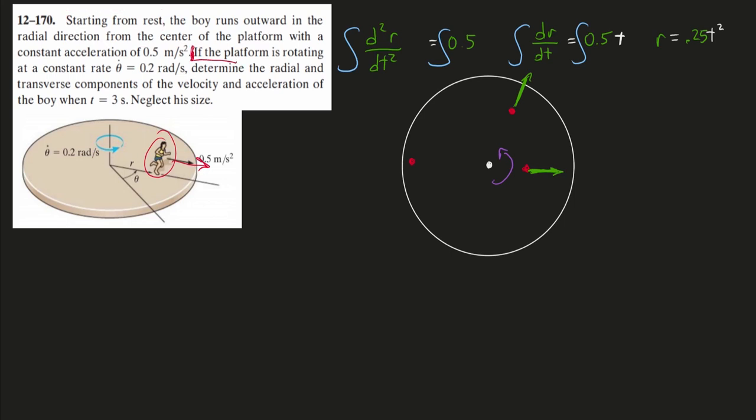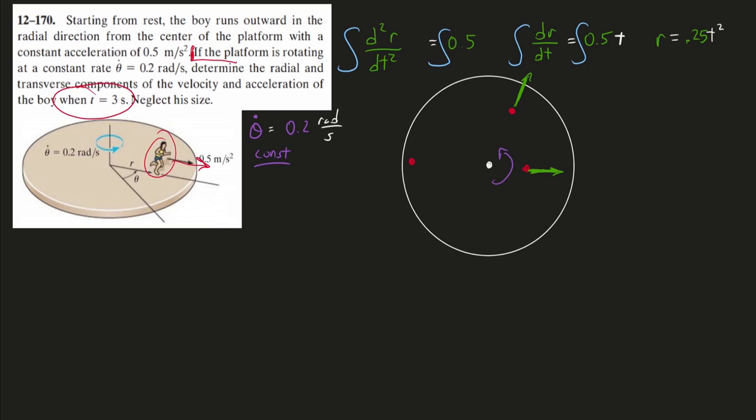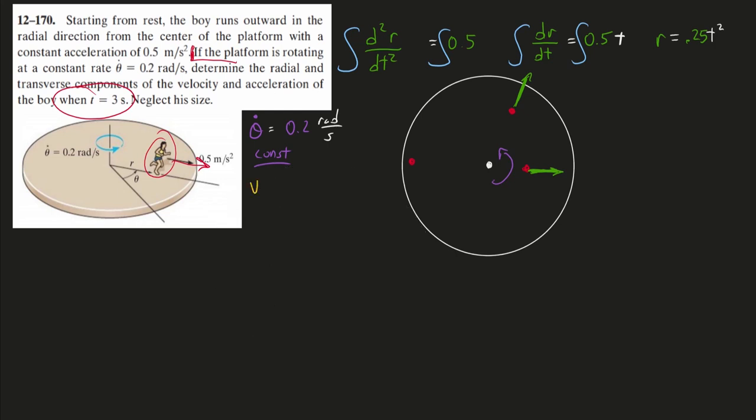If the platform is rotating at a constant rate of 0.2 radians per second, determine the radial and transverse components of velocity and acceleration of the boy at the instant that time is 3. My angular velocity is a constant 0.2 radians per second. Makes it easier that it's constant speed. We want to know my components of v and a at time equals 3.